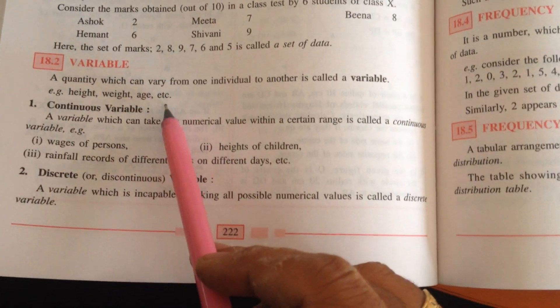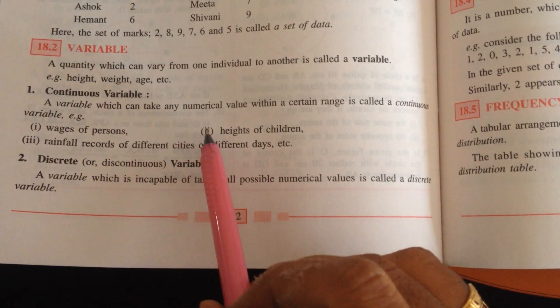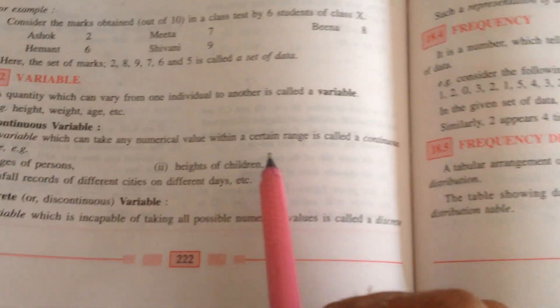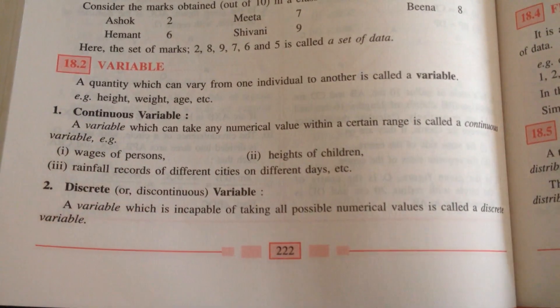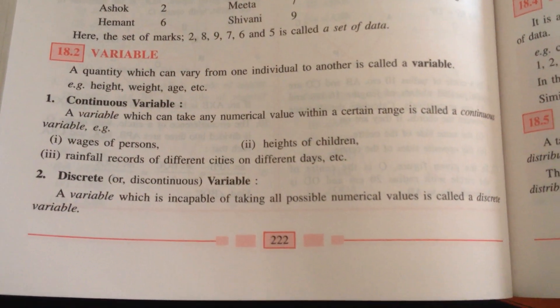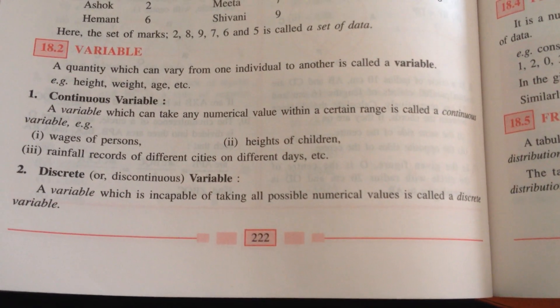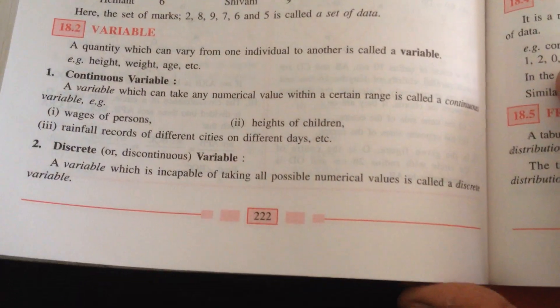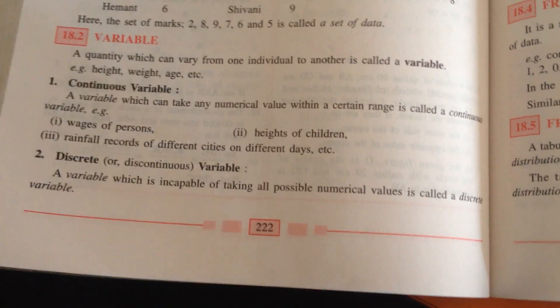Continuous variable: a variable which can be any numerical value within a certain range is called a continuous variable. For example, rainfall or height of children. Height will be stopped at certain condition. Height will be stopped at different ages. So it stops at some point.